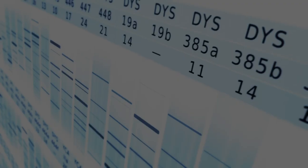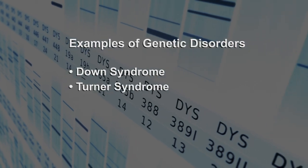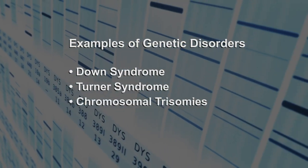Our genetics are determined by the chromosomes in our cells. You have the option to screen for a number of genetic disorders in pregnancy. Some examples are Down syndrome, Turner syndrome, and chromosomal trisomies. Genetic disorders occur if the fetus does not have the usual number of chromosomes, or if there has been a mutation to an important part of a chromosome.